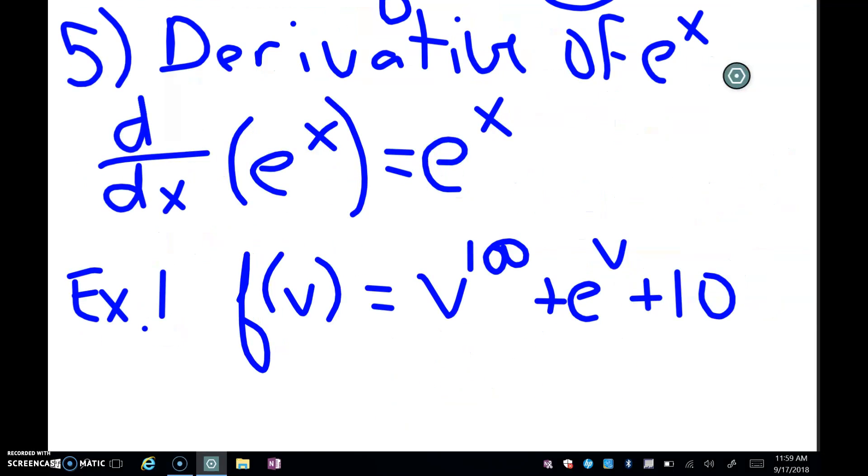My final rule in Section 3.3 is the derivative of the natural exponential function, which we represent by e^x. Simplest rule you'll ever find. The derivative of e^x is simply e^x. That's the only time I know of that the derivative of a function is equal to itself.